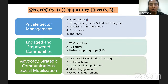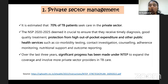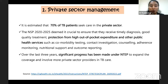Coming to the first strategy: private sector management. It is estimated that 70% of TB patients seek care in the private sector. According to the NSP 2020-2025, it is crucial to ensure all patients receive timely diagnosis and good quality treatment, and to protect them from high out-of-pocket expenditure. Comorbidities testing — diabetes, HIV — contact investigation, counseling, adherence to medication, nutritional support, and outcome reporting should all be provided. Over the last three years, significant progress has been made under the NTP to expand coverage and involve more private sector providers in TB care.